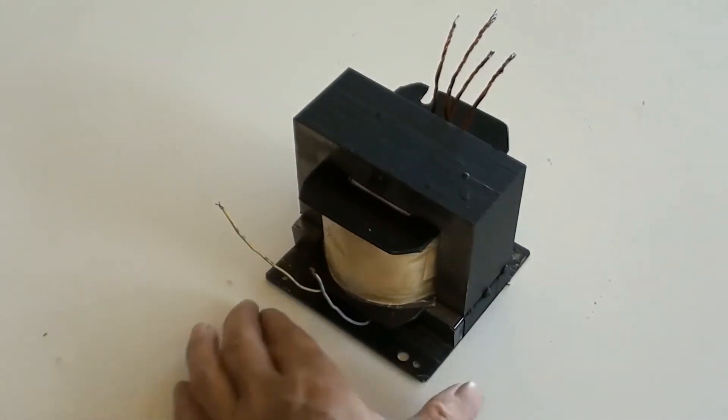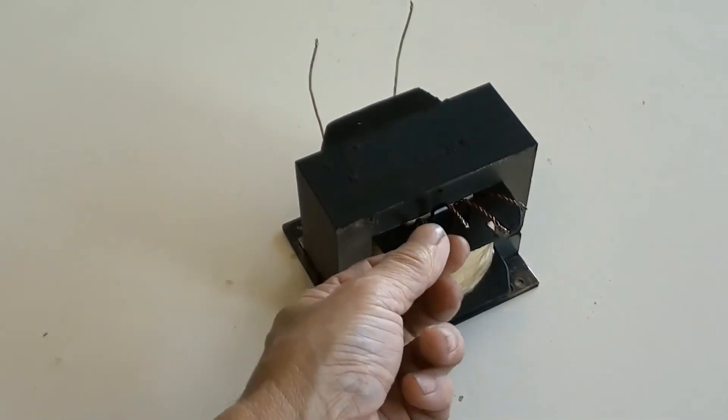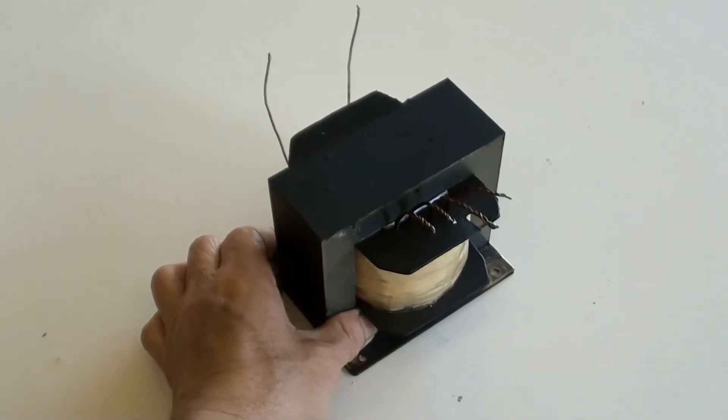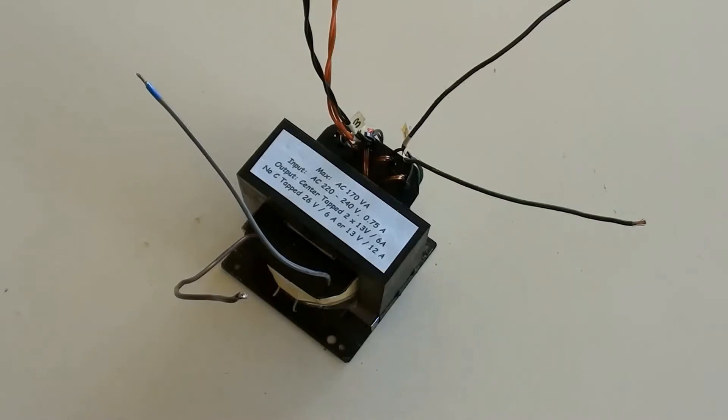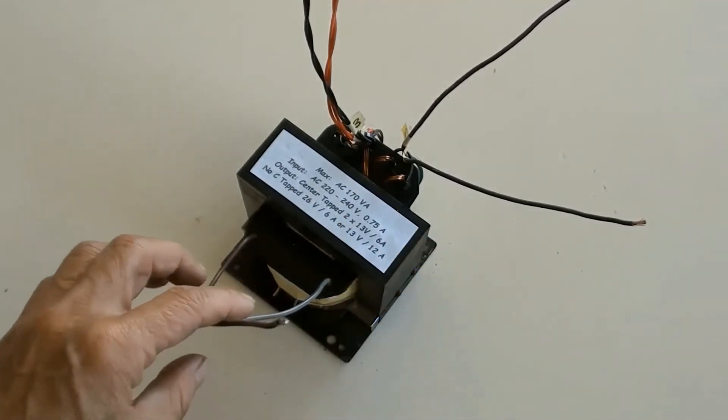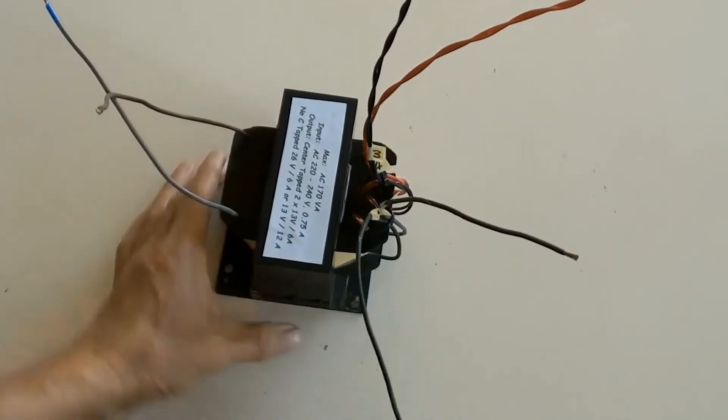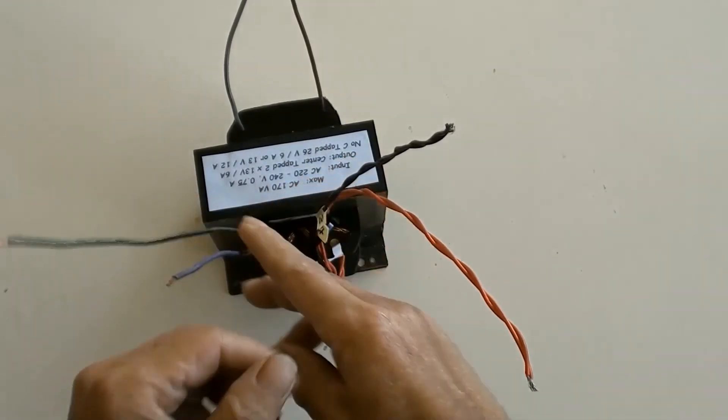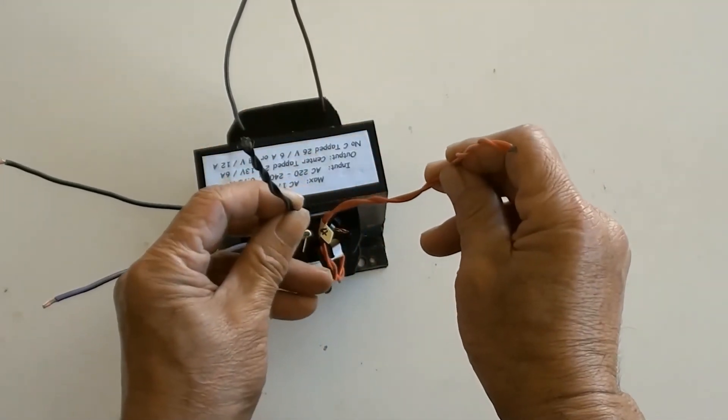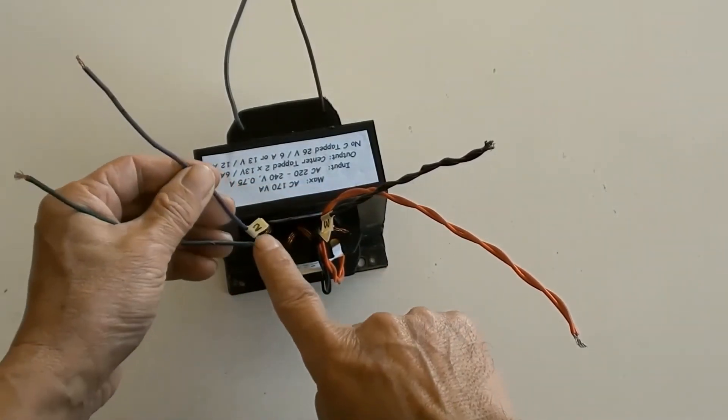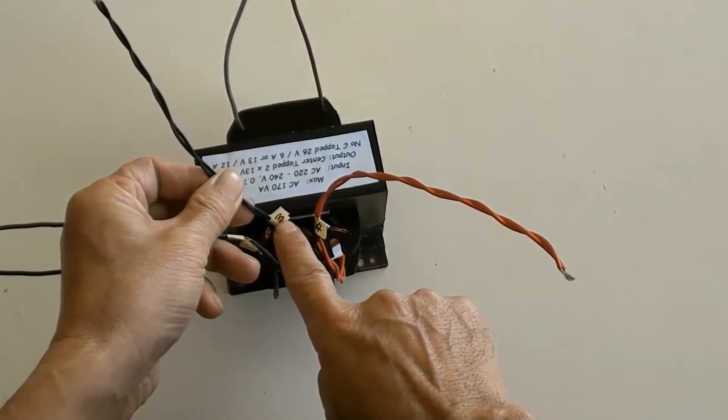These are input terminals wires for 220 to 240 volt. These are the output terminal one and two, and so are three and four, they are all 13.5 volt. Finally the transformer has been properly made. This is output terminals wires for coil one, and that is output terminals wires for coil two. Coil one terminals has been marked one and two, and so three and four has coil two.